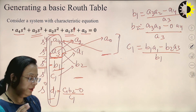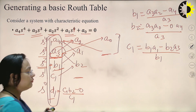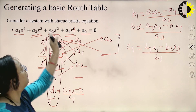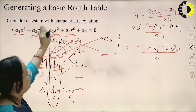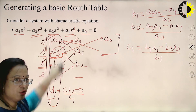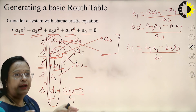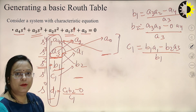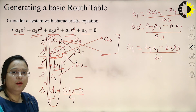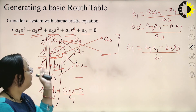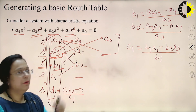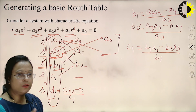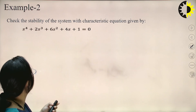There are also two special cases: one where a single element in the first column becomes zero, and another where an entire row becomes zero. These two special cases will be discussed in the next lecture.